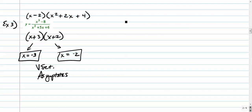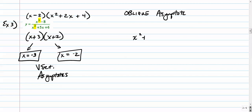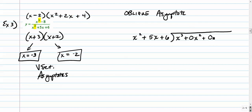Looking at the degrees, we have 3 in the numerator and 2 in the denominator. Since the numerator degree is exactly one bigger, that's an indicator we're going to have an oblique asymptote. To calculate it, since the denominator is non-linear, we have to do long division.